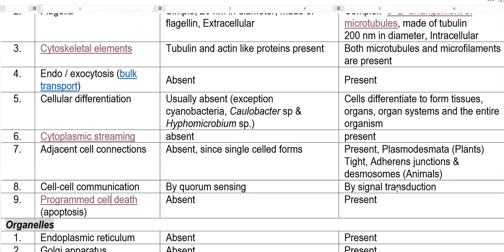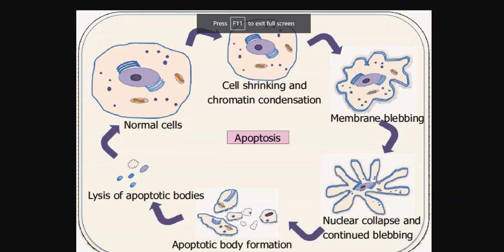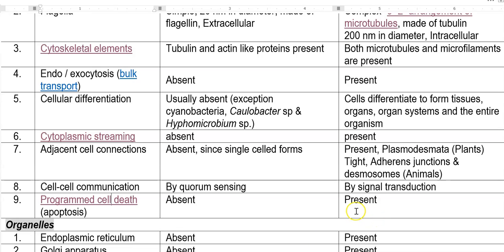The next one is programmed cell death. The term that explains programmed cell death is apoptosis. A normal cell undergoes apoptosis through a cycling process in which the cell is programmed to die, ultimately lysing and dying. This occurs for worn-out or old cells. Such mechanisms are present in eukaryotic organisms, but there is no programmed cell death in prokaryotes.